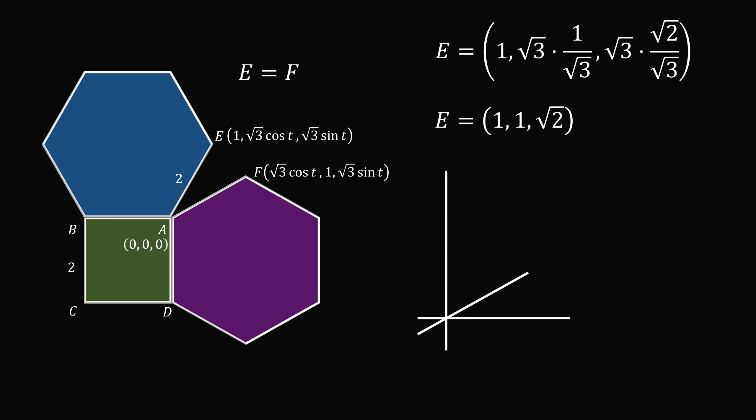So now let's plot the points A and E. A is the origin and E is at (1, 1, square root of 2). We know the length of AE is equal to 2, and we know that its height is equal to the square root of 2. We can thus solve for the length of the other leg. This will be equal to the square root of 2.